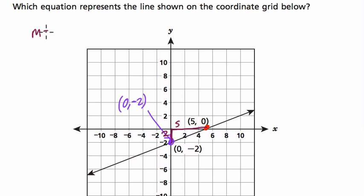M is for slope, and slope is always your rise, 2, divided by your run, 5.